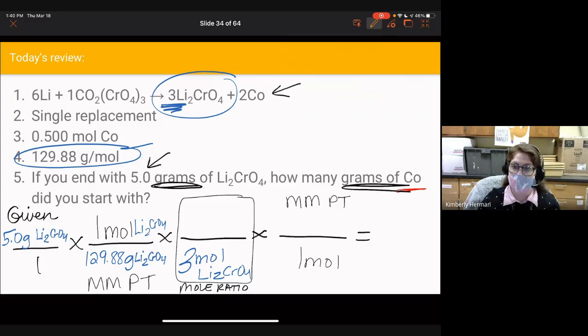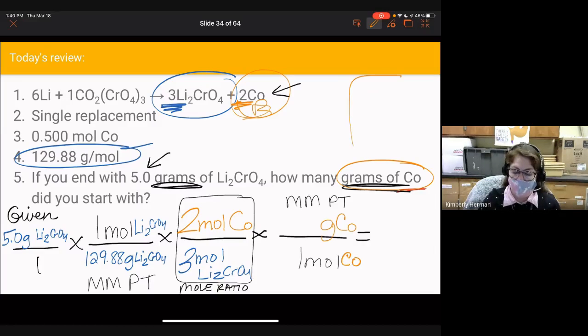This is where we pivot and transition from A to B. We're trying to get to grams of Co, so we find B in our balanced chemical equation, and we see there's a 2 in front. We'll write 2 mol of Co there. This is one mole of Co because we're at our molar mass point. Now we go to the periodic table and find Co for cobalt, not carbon and oxygen. We see it's 58.93 g/mol, so we'll fill in 58.93 here.